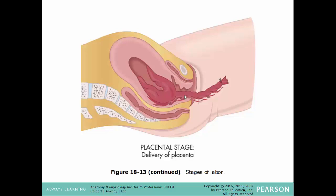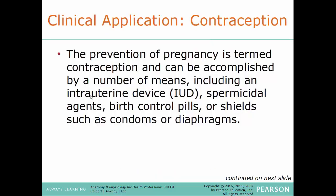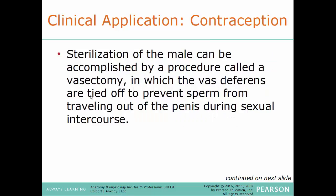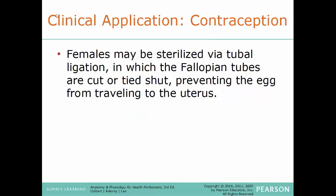Contraception — prevention of pregnancy — can be accomplished by a number of means including an IUD (intrauterine device), spermicidal agents, birth control pills, and shields such as a diaphragm or condom. Sterilization of a male is done by vasectomy, where the vas deferens is tied off and cauterized to prevent sperm from exiting the penis. The corresponding procedure in females is tubal ligation — 'getting your tubes tied' — where the fallopian tubes are pulled out, cut, and cauterized so eggs can't be fertilized by sperm.